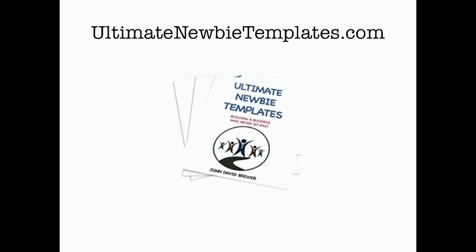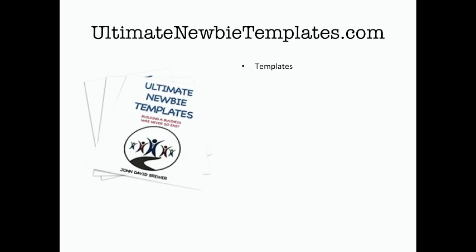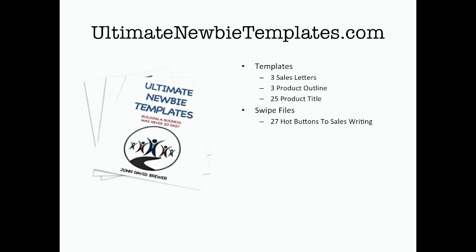I've created a product to help you with all of this called Ultimate Newbie Templates. It's a compilation of several different templates: three different sales letters, three different product outlines, and 25 product titles. I've also added some swipe files — one is 27 Hot Buttons to Sales Writing, an awesome tool. The second is 101 Writing Idea Generators: things to help you generate ideas of what to write about, what stories to use, and what products to create. I've also put in some checklists to help you build a product from the ground up and write your sales letter to help sell your product.